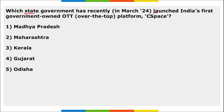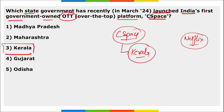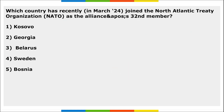Next: which state government has recently launched India's first government-owned OTT platform, 'C-Space'? It is Kerala. Kerala owns this first OTT platform, C-Space. OTT platforms include Netflix and Amazon Prime, and it is the Kerala State Film Development Corporation that owns C-Space. The Chief Minister of Kerala is Pinarayi Vijayan.